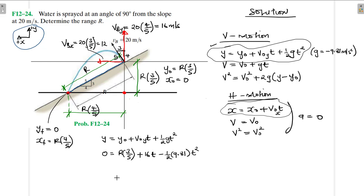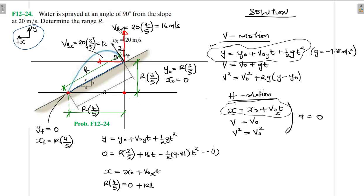For equation two, x equals x₀ plus v₀x times t. x_final equals R times 4 over 5, x₀ equals 0, and v₀x equals 12, so: R times 4 over 5 equals 12t. This is the second equation.